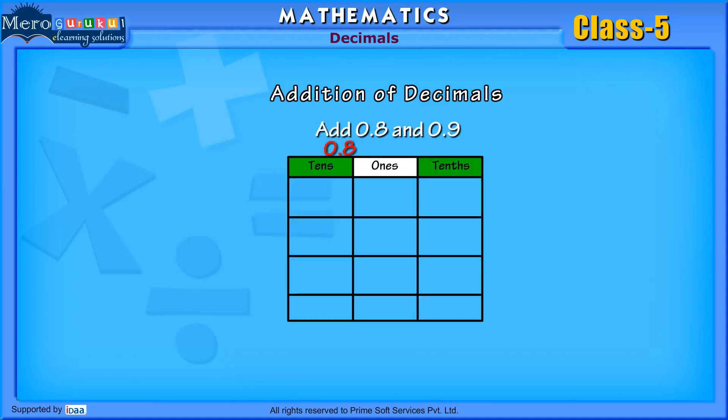Add 0.8 and 0.9. The sum of 0.8 and 0.9 is 1.7.